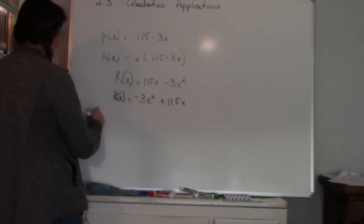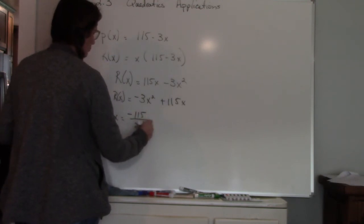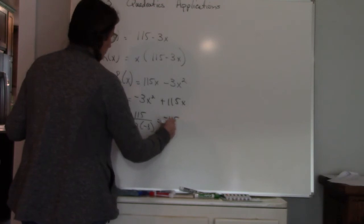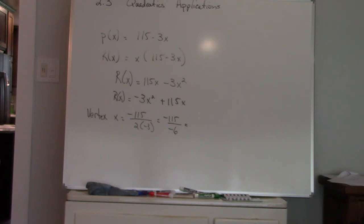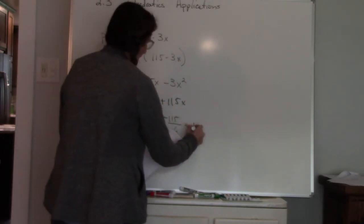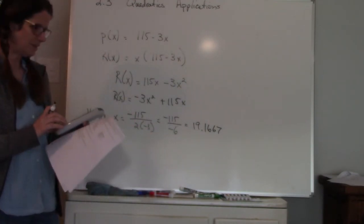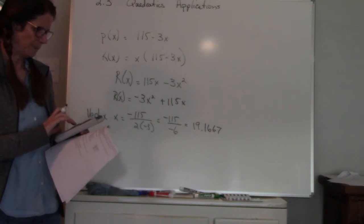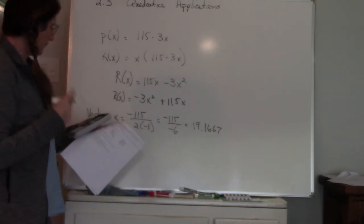So vertex, if X represents the number of items, the X value is going to be negative B divided by 2 times A. So I have negative 115 divided by negative 6. Let me grab my calculator again, so I end up with 115 divided by 6 which is about 19.1667. So I need about 19 products. If I want to change this to a fraction I can leave it as 115 over 6 and it's positive.